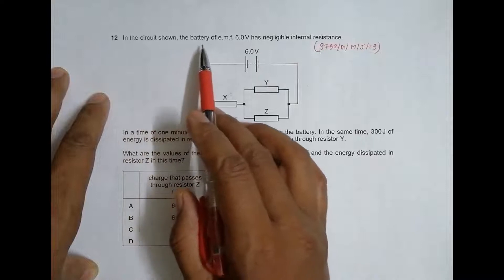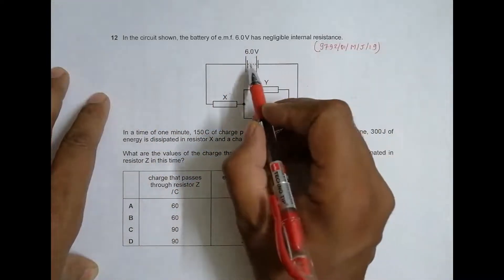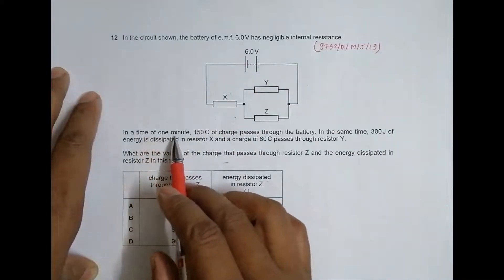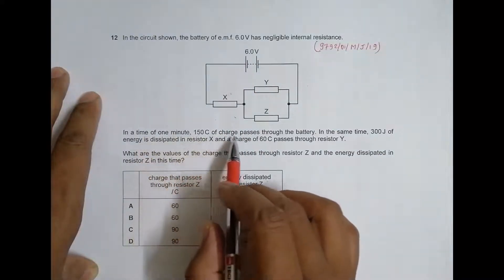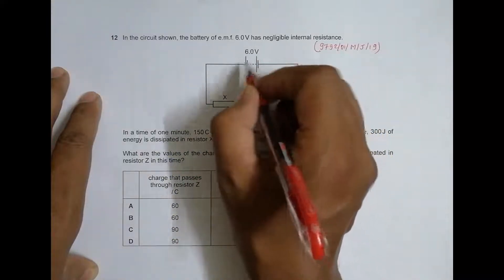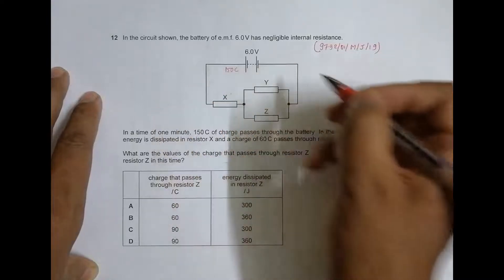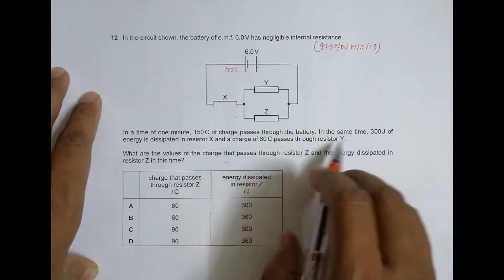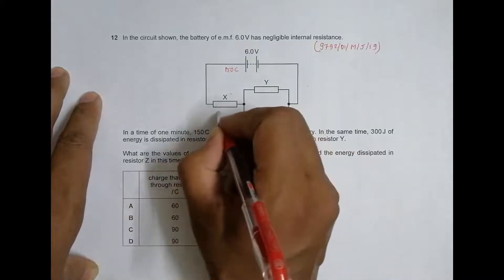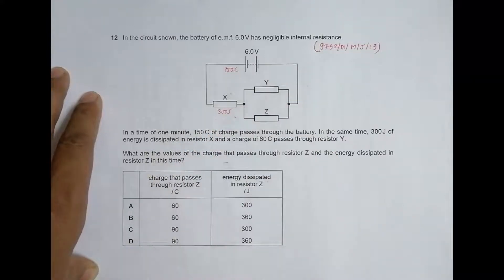The circuit shown has a battery of EMF 6 volts with negligible internal resistance. In a time of one minute, 150 mC of charge passes through the battery. In the same time, 20 joules of energy is dissipated in resistor X, so here it will dissipate 300 joules of energy.